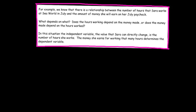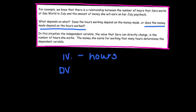Let's look at an example. There's a relationship between the number of hours that Sarah works at a job and the amount of money she's going to get paid. The question is: what depends on what? Does the hours working depend on the money, or does the money made depend on the hours worked? If you think about it, if she works more hours she would get paid more. Therefore, the money made depends on the hours worked. The independent variable (IV) is the hours she's worked, and the dependent variable — the result — is the money that she's made. The more hours she works, the more money she makes.